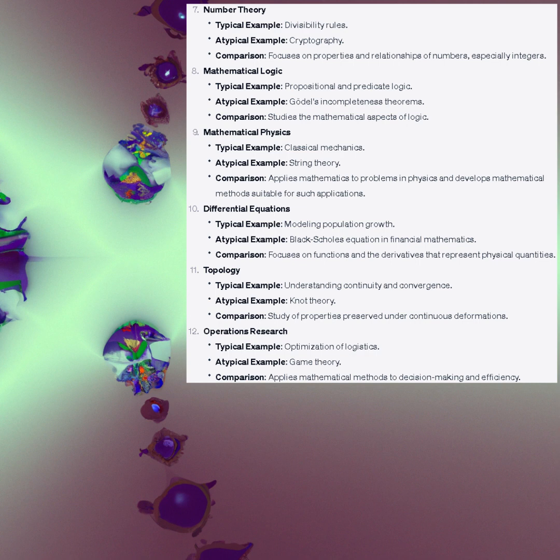Mathematical logic. Typical example: propositional and predicate logic. Advanced example: Gödel's incompleteness theorems. Comparison: studies the mathematical aspects of logic. Mathematical physics. Typical example: classical mechanics. Advanced example: string theory. Comparison: applies mathematics to problems in physics and develops mathematical methods suitable for such applications. Differential equations. Typical example: modeling population growth. Advanced example: Black-Scholes equation in financial mathematics. Comparison: focuses on functions and the derivatives that represent physical quantities.